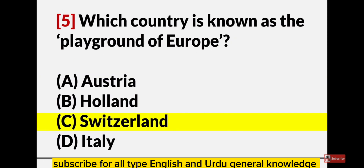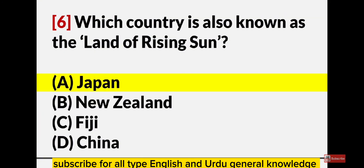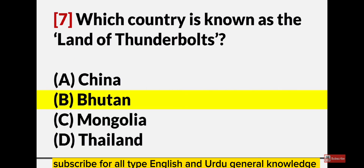Which country is known as the playground of Europe? Switzerland. Which country is also known as the land of the rising sun? Japan. Which country is known as the land of thunderbolts? Bhutan.